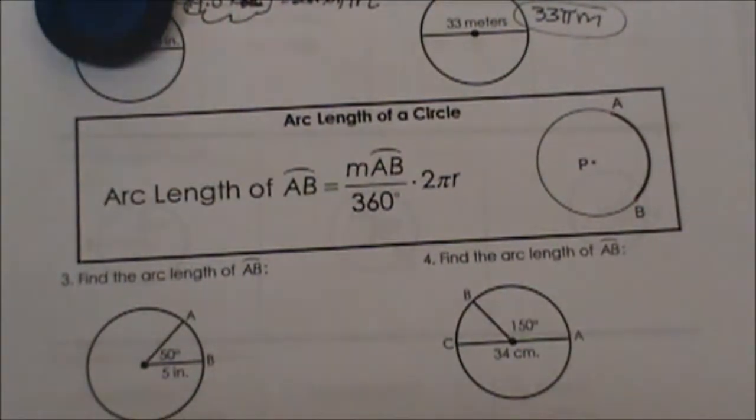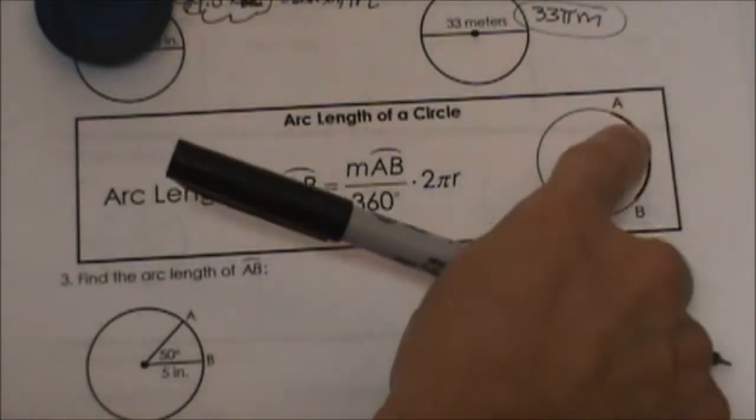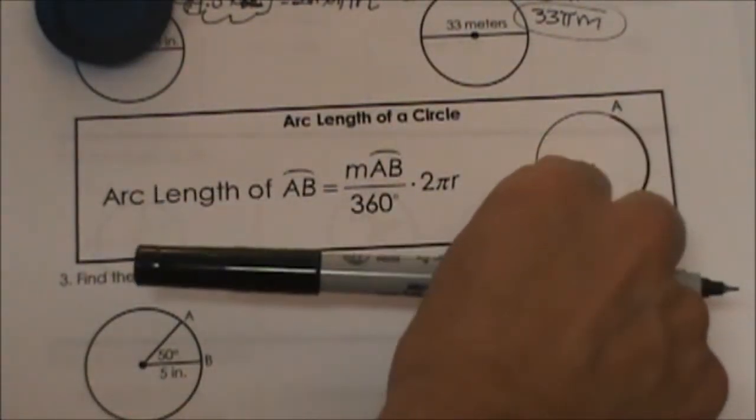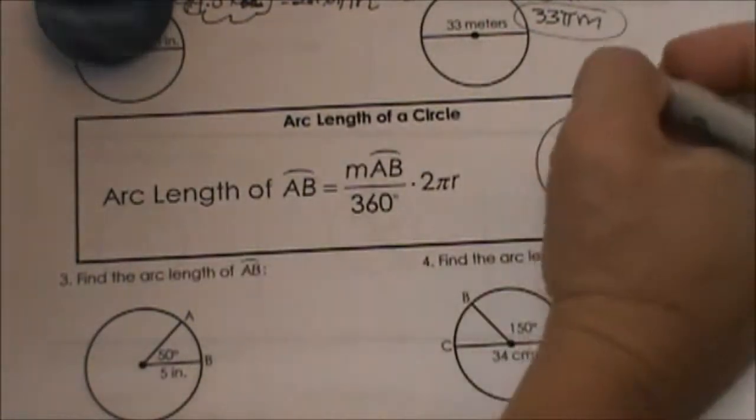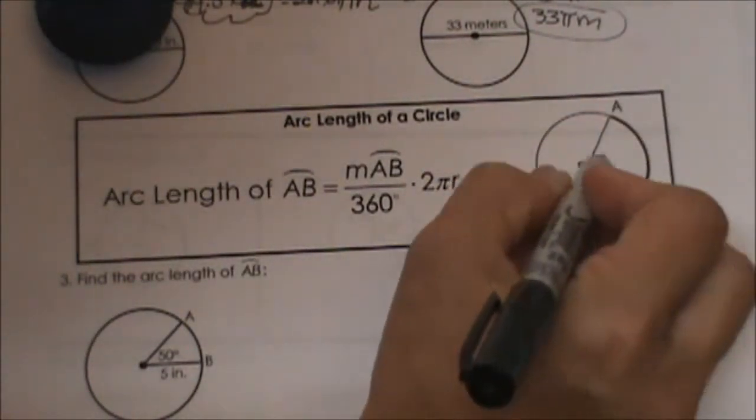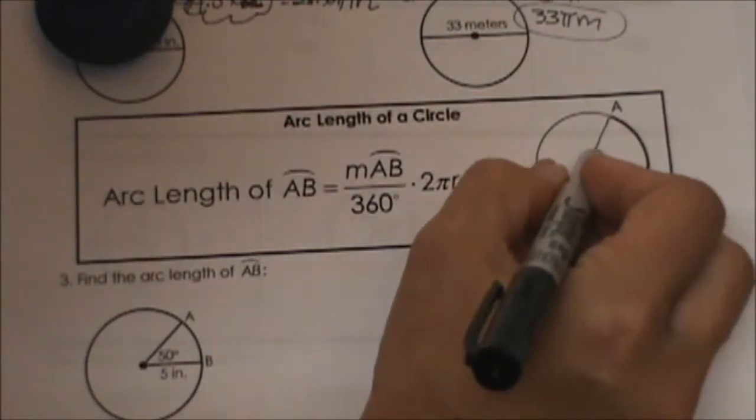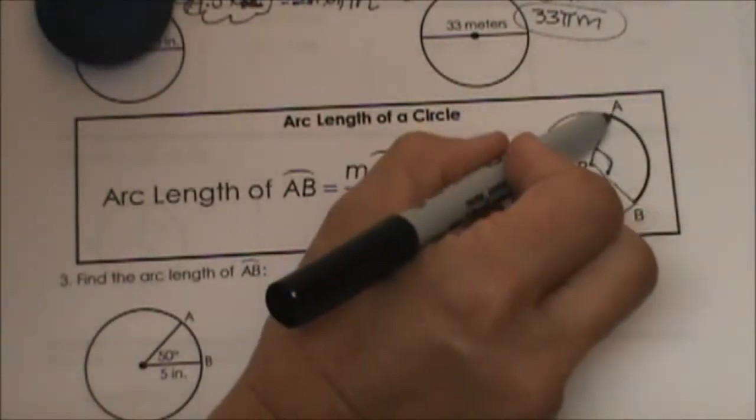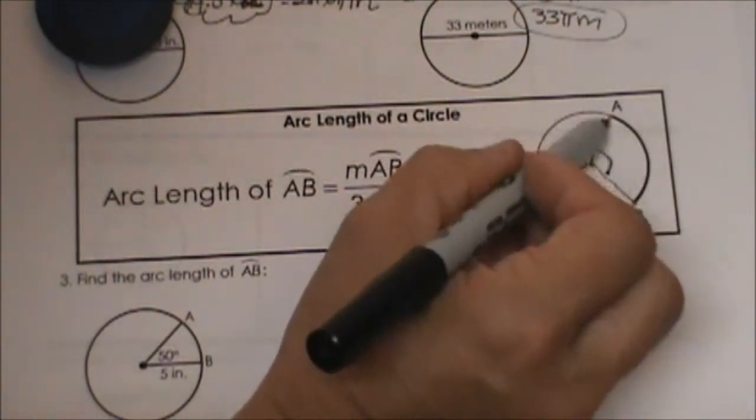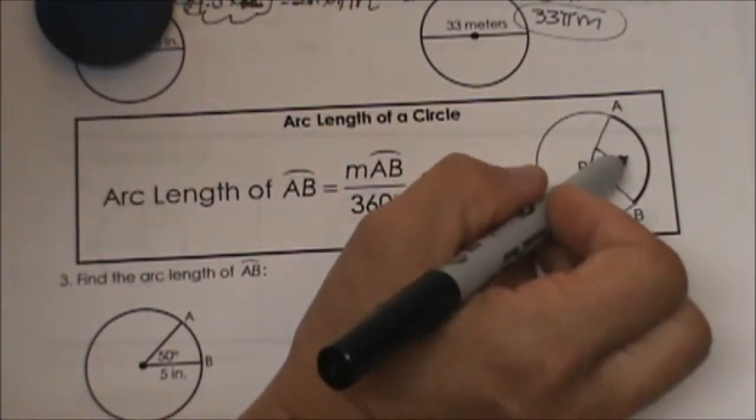I don't want you to get confused between arc measure and arc length. Arc measure is in relation to 360 and that relates back to your central angle. So if I were to draw an angle from A to P to B, let's say this angle was 120 degrees. We know we learned that AB has a measure of 120 also, but that is not its length.